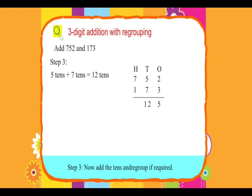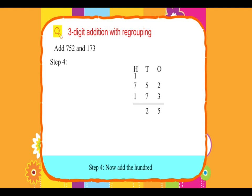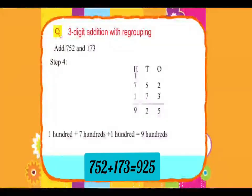Since 10 tens equals 100, therefore 12 tens equals 100 plus 2 tens. Carry over 100 to the hundreds column and add the hundreds. Step 3: Add the hundreds. 1 hundred plus 7 hundreds plus the carried-over 100 equals 9 hundreds. So the required sum is 925.